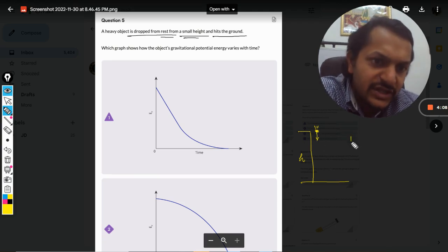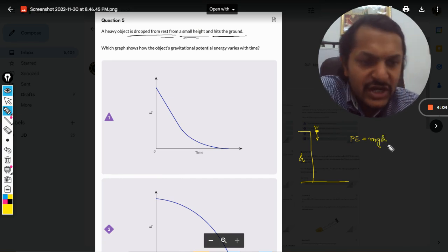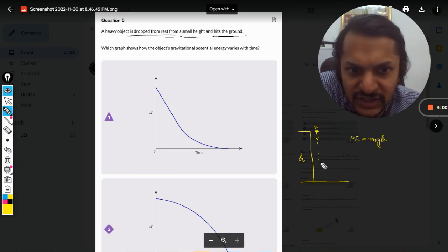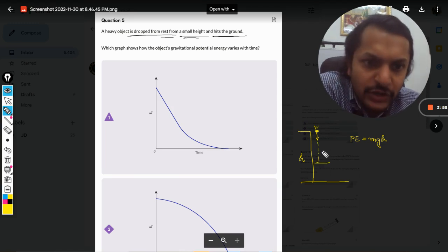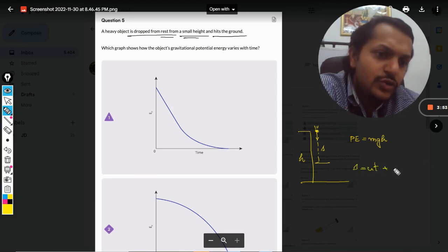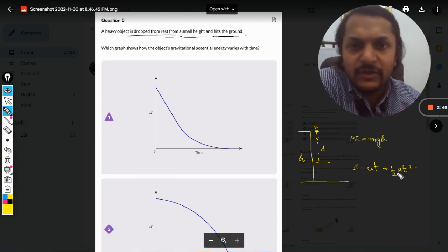the potential energy will be equal to MGH. But this H is going to change. It is going to cover some distance as it falls, so I can call this distance as S. And so S is equal to UT plus half AT squared. We know this formula will be applicable. Why?